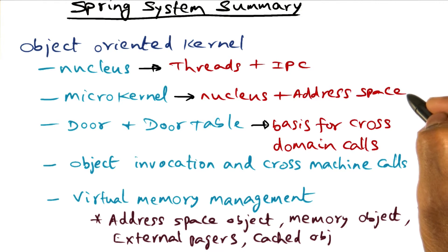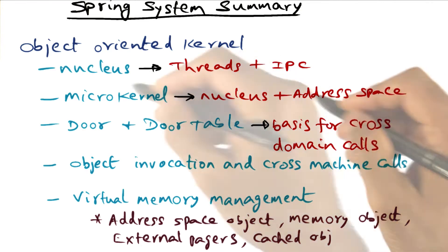And everything else lives above this kernel. Meaning all the services that you normally associate with an operating system, such as file system, network communication, and so on, they're all provided as objects that live outside of this kernel.